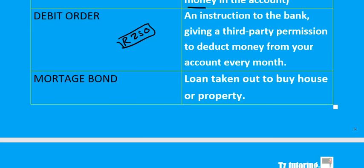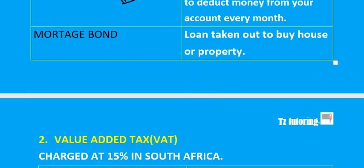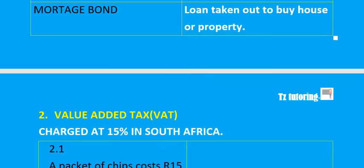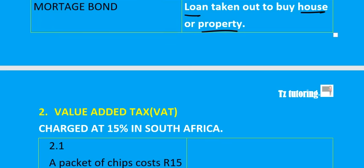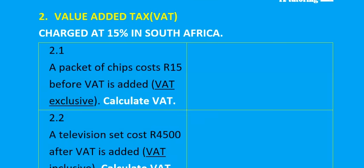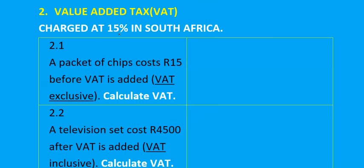A mortgage bond is a loan taken out to buy a house or property. Now let's move on to Value Added Tax (VAT). In South Africa, VAT is charged at 15% — it used to be 14% but is now 15%.